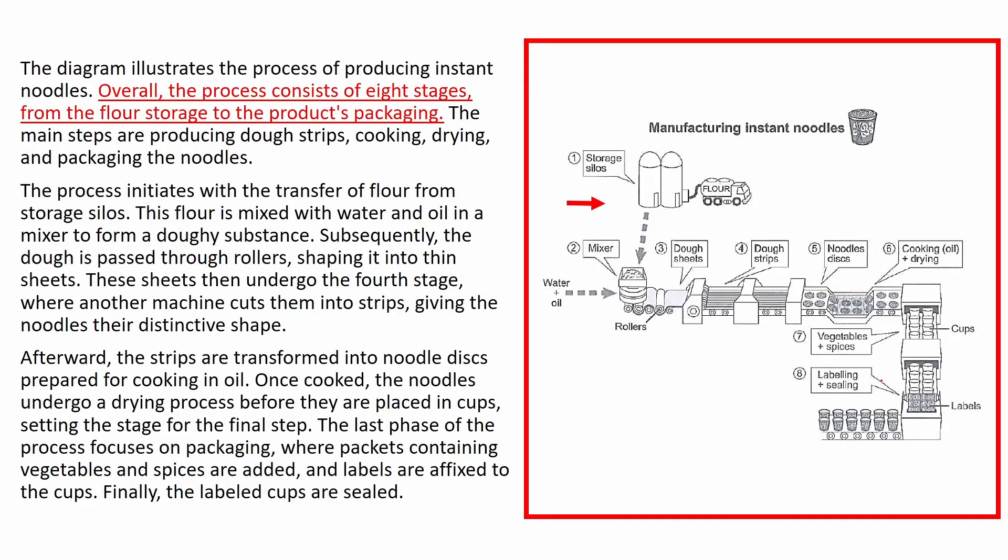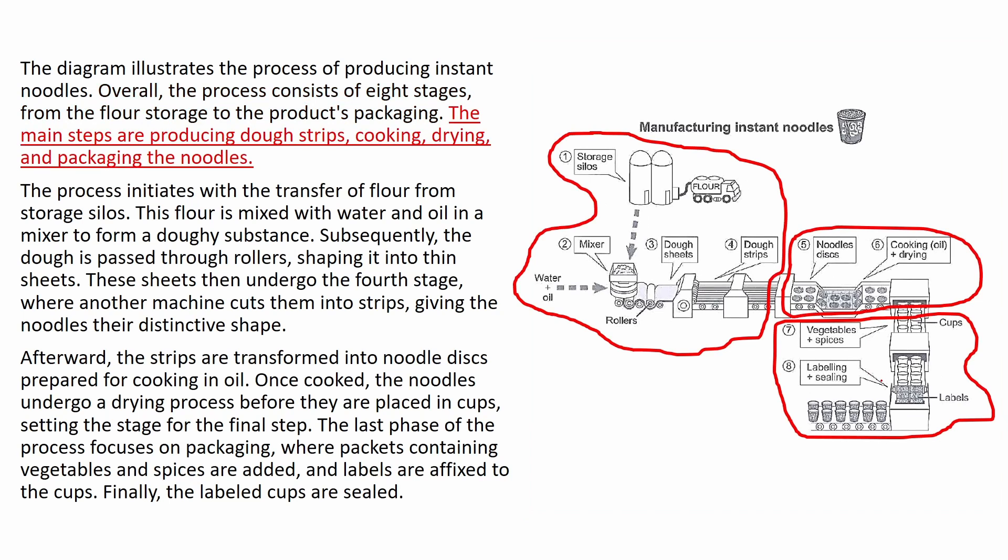This is my model answer. We just read the paraphrase together. Let's read the overview. So we said we mention the number of steps, the beginning and the ending points. Overall, the process consists of eight stages from the flour storage to the product packaging. Now it's time to add the groups I talked about earlier. The main steps are producing dough strips, cooking, drying, and packaging the noodles.